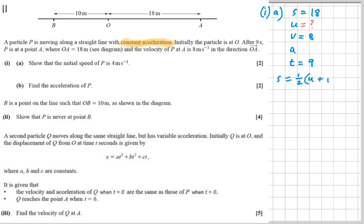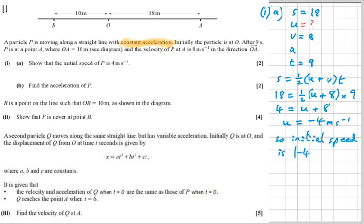If we use the SUVAT equation s equals a half u plus v times t, substitute into that, solve it for u, we get u is minus four meters per second. And of course, that means it's a speed of four meters per second, even though it's going to the left.